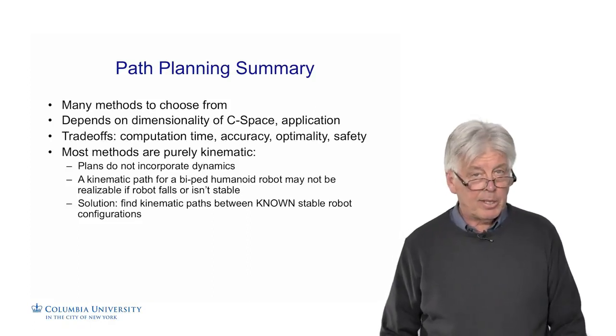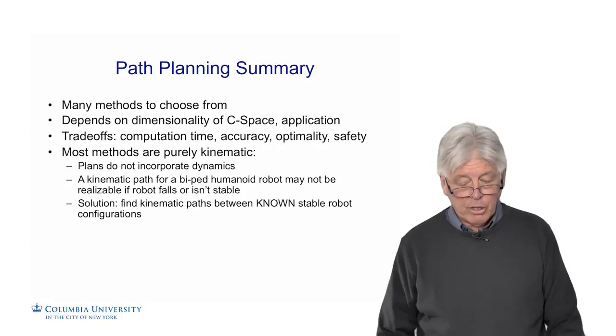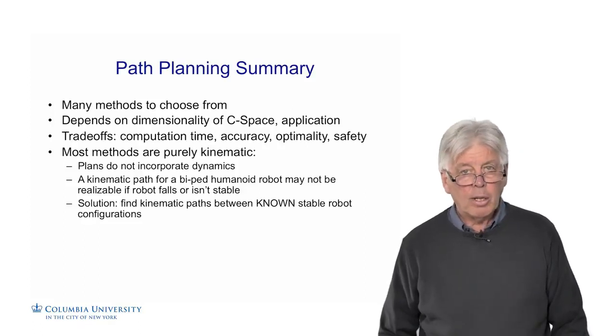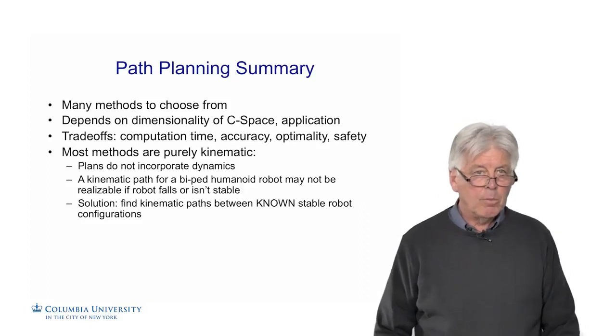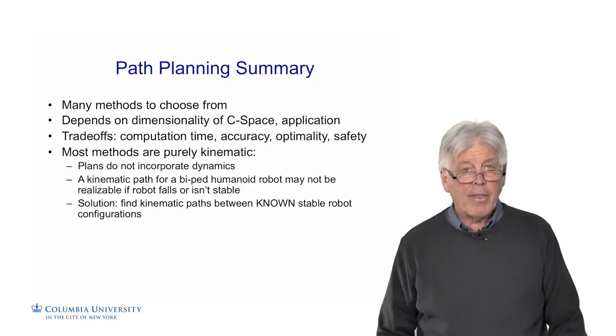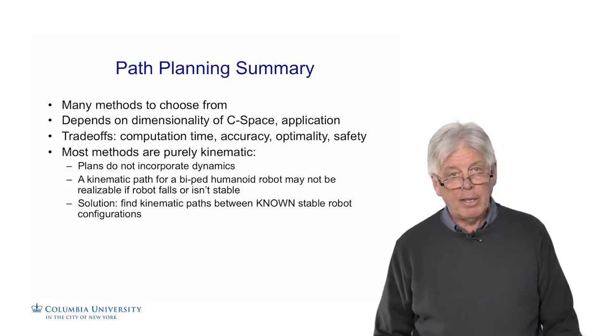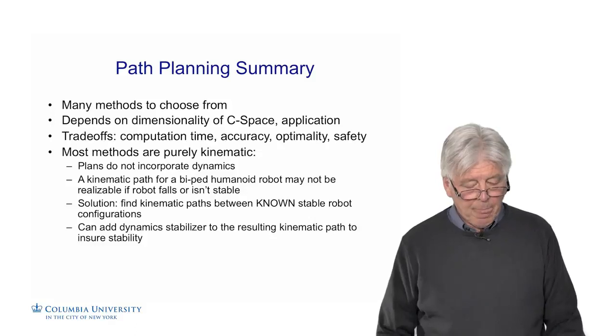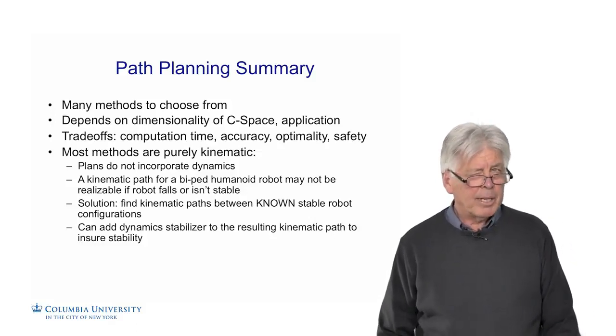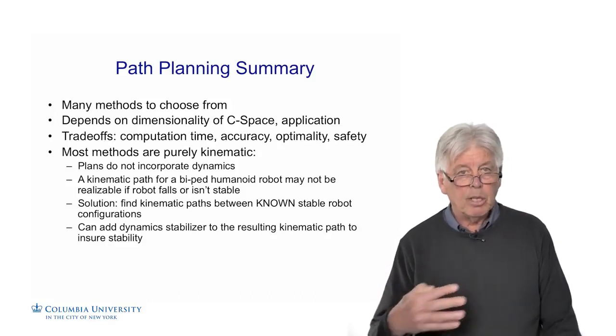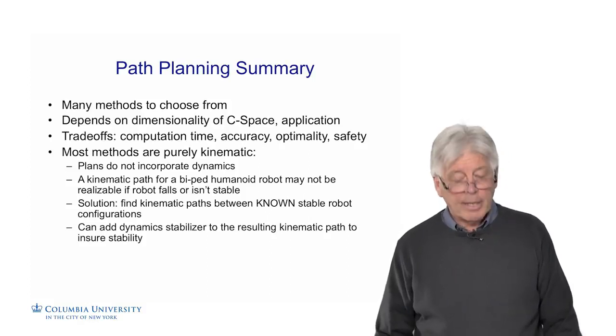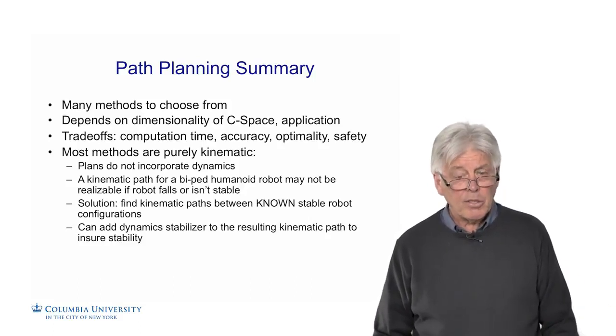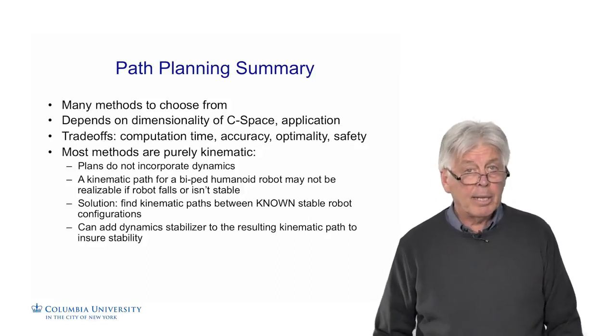What you can do is restrict your configuration space where you're sampling to known configurations which are upright and safe for a humanoid robot. You might have ones where, if it's a bipedal robot, it has one leg in front of the other, so you can find positions where it can move efficiently from one configuration to another. Once you do that, that becomes your configuration space. You don't have to sample a lot of obviously bad configurations. You want to just try the ones that you know seem to be reasonable. Even if you do that, you get a kinematic path, but there's no guarantee that it's going to be stable because between configurations which are known stable, it may be unstable. What you can do is add a dynamic stabilizer, much like a local planner, to smooth the resulting kinematic path and ensure stability. You can think of this as a two-part planner where it does a kinematic plan and then the dynamic plan on top of that.